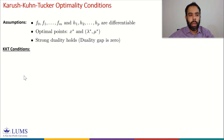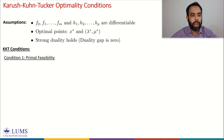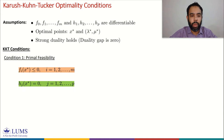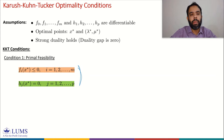The first KKT condition is primal feasibility. As the name suggests, it simply means that X star, the optimal point of our primal optimization problem, must satisfy the inequality constraints and equality constraints. Mathematically, F_i(X star) ≤ 0 for i = 1, 2, ..., M, and H_j(X star) = 0 for j = 1, 2, ..., P. These equations simply mean that X star is primal feasible, or X star belongs to the feasible set of the primal optimization problem.